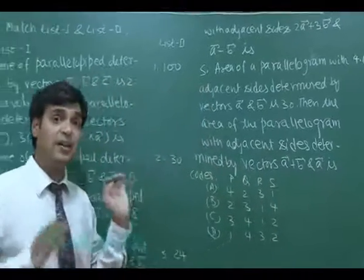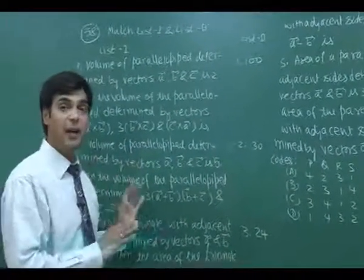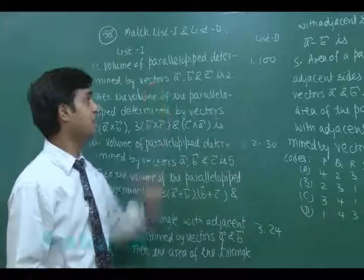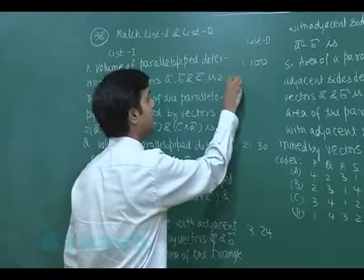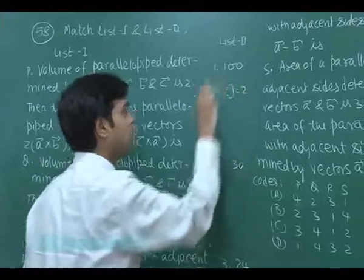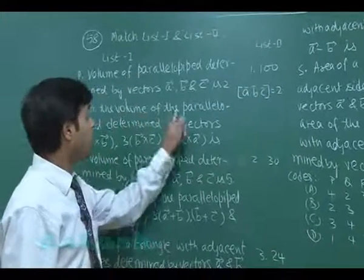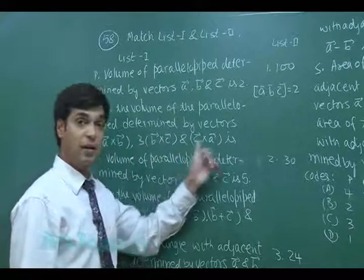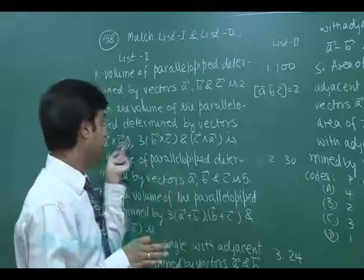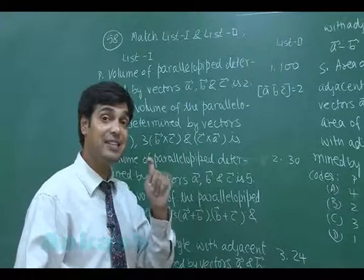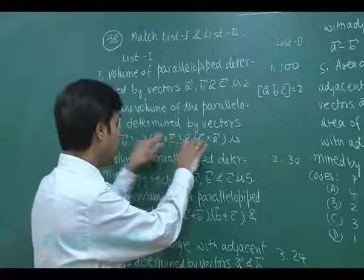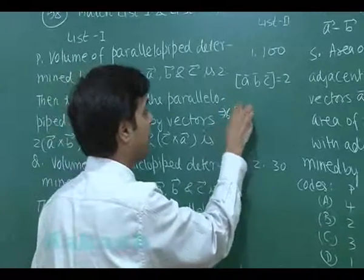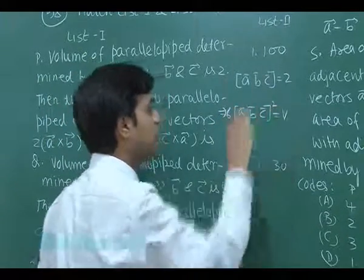Although it appears lengthy when written, it's quite a simple direct result. Volume of parallelepiped determined by vectors a, b, c is two, meaning the scalar triple product [a b c] equals two. For the volume with vectors 2a×b, 3b×c, c×a, we know that the scalar triple product [a×b, b×c, c×a] equals [a b c]² (scalar triple product whole square), so the entire expression simplifies to 6 times [a b c]².